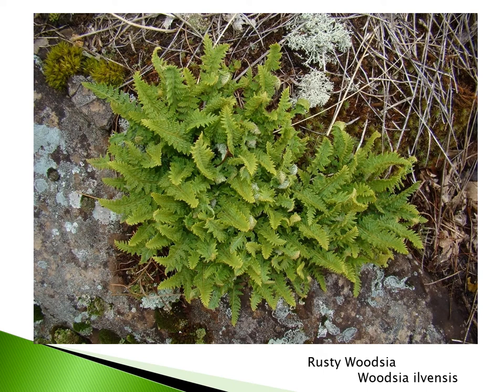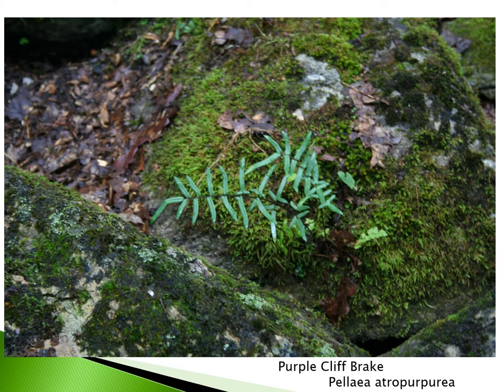Rusty woodsia is a species commonly found in the central part of the state — quite common on Mount Tom. This plant will tolerate full sun but also grows in shaded locations. It's called rusty woodsia because the spore cases or sori on the back of the fronds are a rust color; it can also be covered with rust-colored scales at the base of the stipe. Another great plant for the rock garden, thriving in sunny locations yet tolerating shade, preferring a gravelly soil that tends to dry out more quickly.